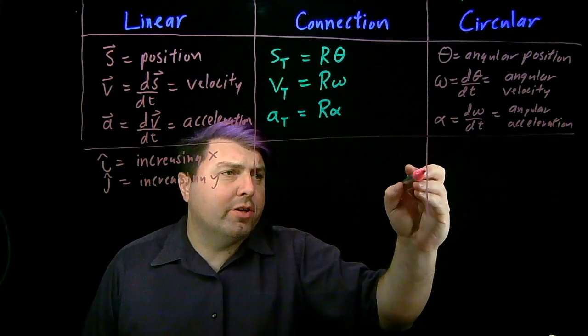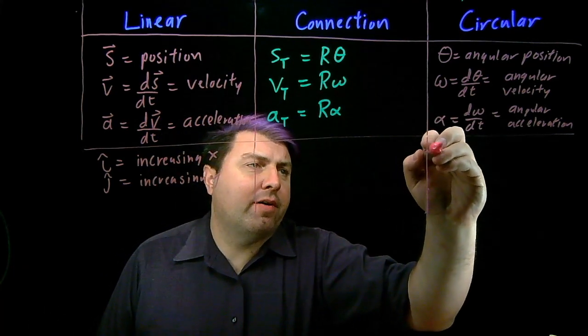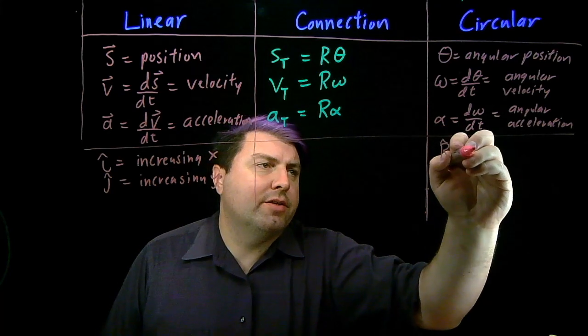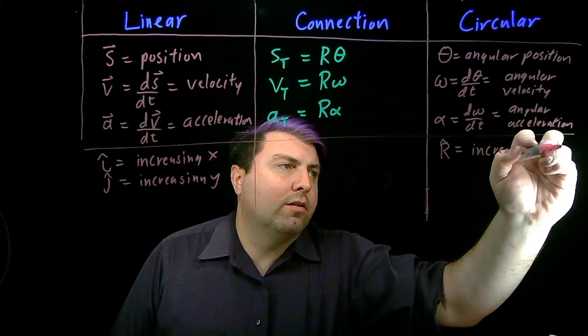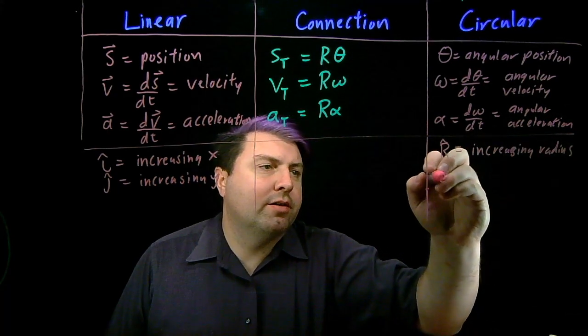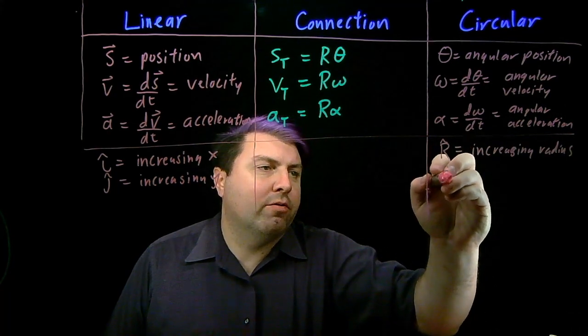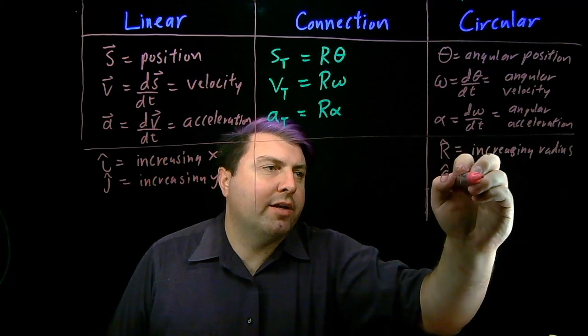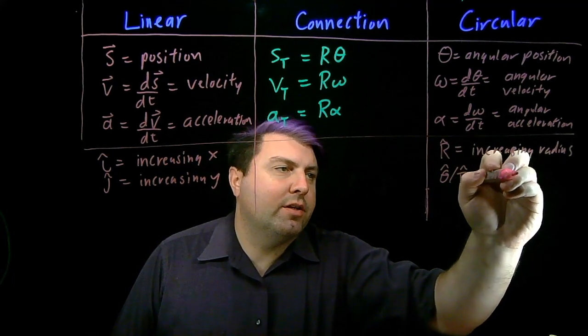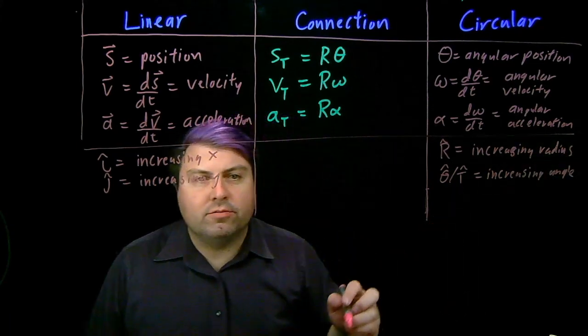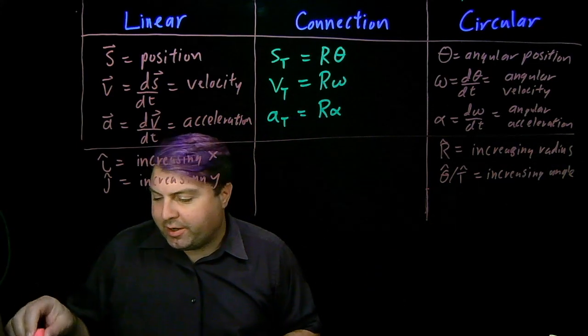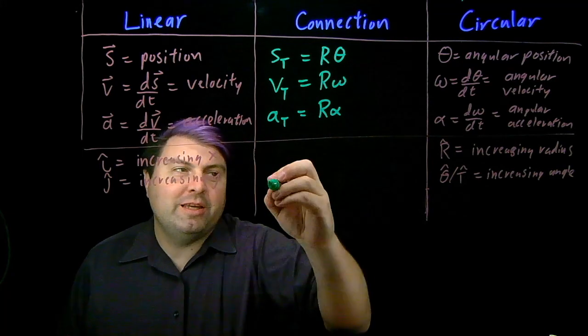In circular motion, we instead define that r hat is the direction of increasing radius, and theta hat, or kind of our tangential hat, is increasing angle.